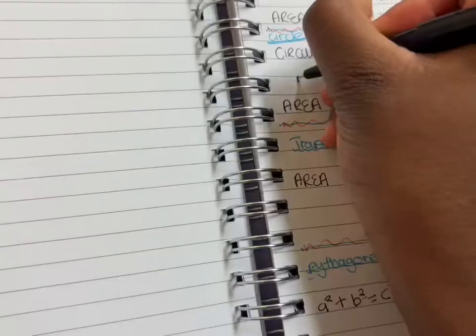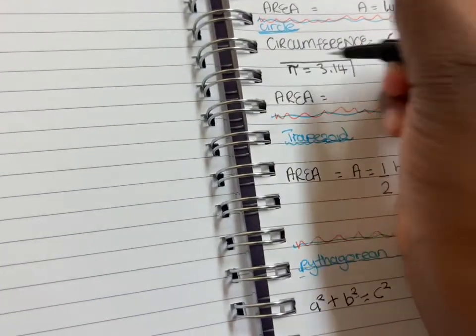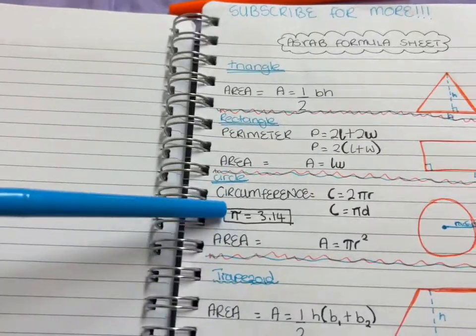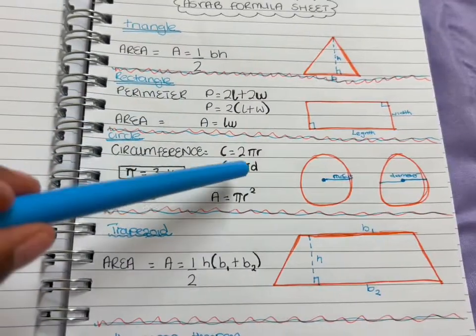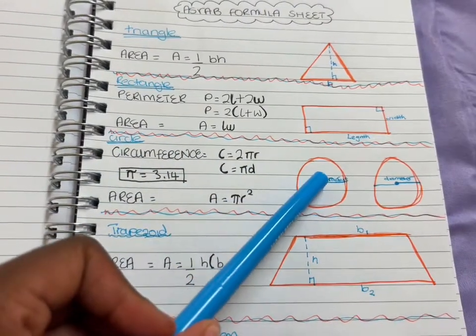For the circles, the circumference is just two pi r. Matter of fact, let me write it down.